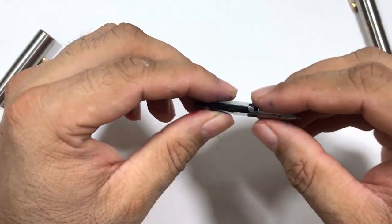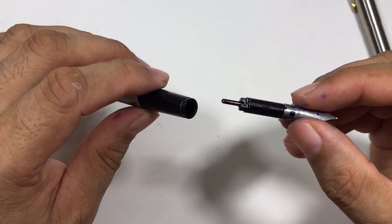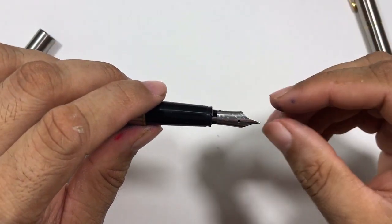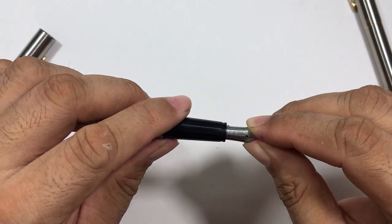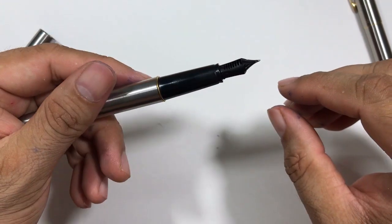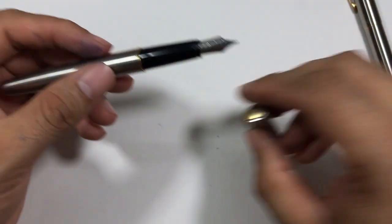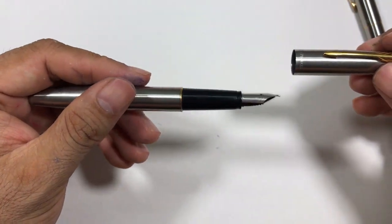You cannot replace this nib with any other Indian or any other Western nibs of number five or four. This is the biggest disadvantage of this pen. If the nib breaks, then you need to get the Parker nibs that are not usually easy to get.